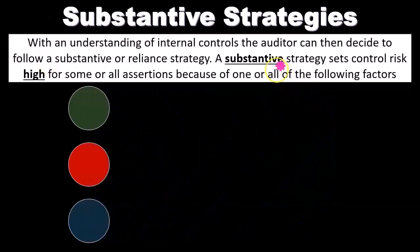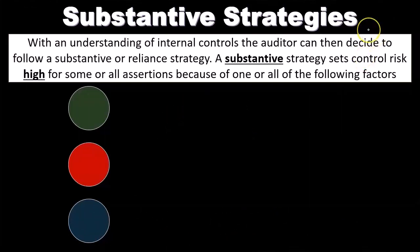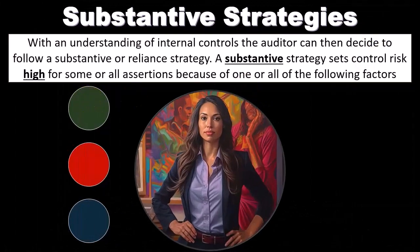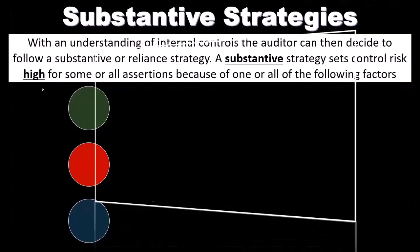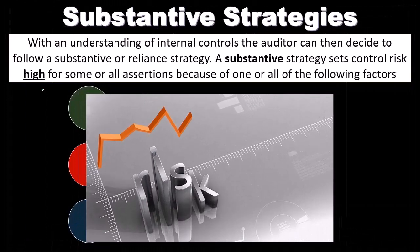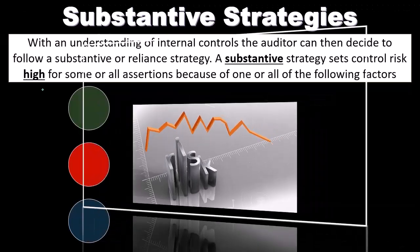The reason we would have a substantive strategy is because we're not reliant on internal controls. For some reason, we've decided that the internal controls are something we couldn't rely on, and so we're going to be doing more substantive, more actual work-type testing. Once you have that down, you need to understand that this means control risk has been set high. Control risk is one of our risk factors, and if we say control risk is high, that means there's a high risk that the internal controls set up by management will not catch a material misstatement.